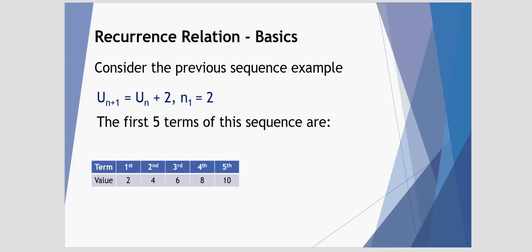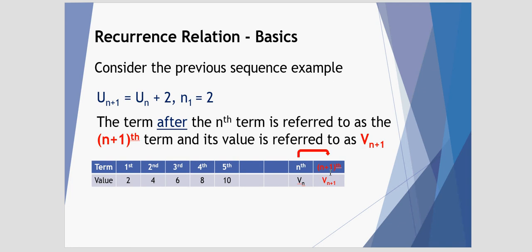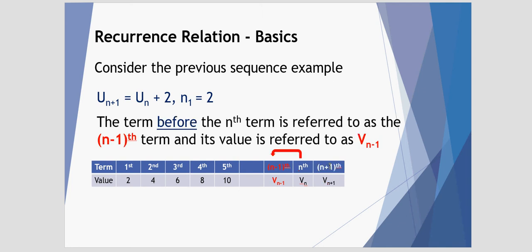So here we have the first five terms from our previous sequence. I want to consider somewhere in the future, it might be term 10, term 20, term 156, we have some nth value, an nth term associated with a value for that particular term. The next term after that we refer to as the n plus 1th term. So if this was the 50th term, this would be the 51st term. And also we have a value for that particular term as well. Likewise, if you go backwards 1 from the nth term, you have the n minus 1th term. And the value of that is the v of n minus 1.